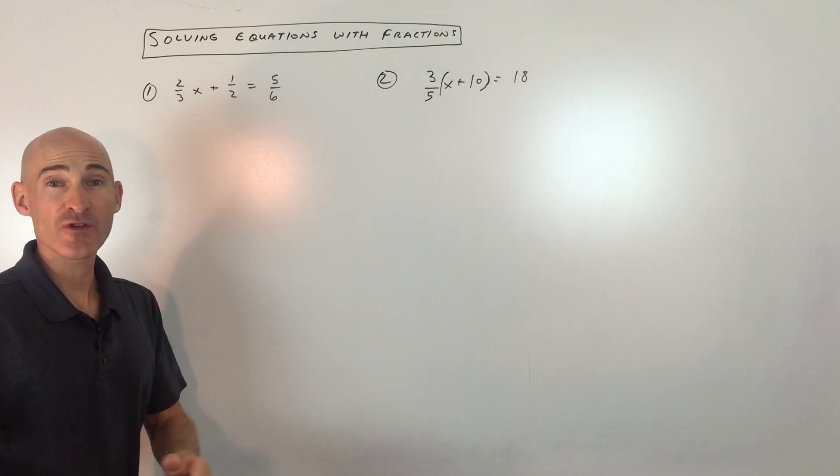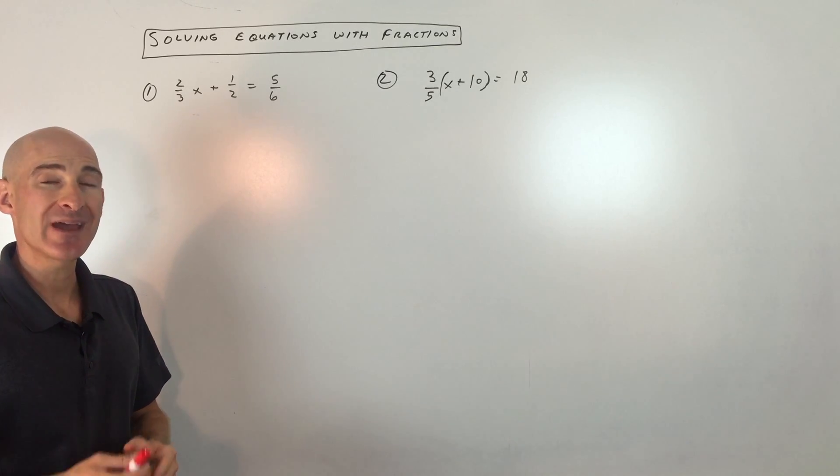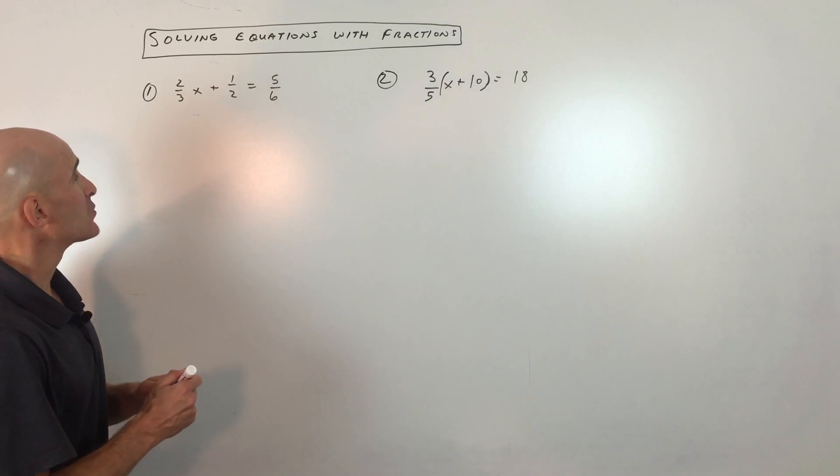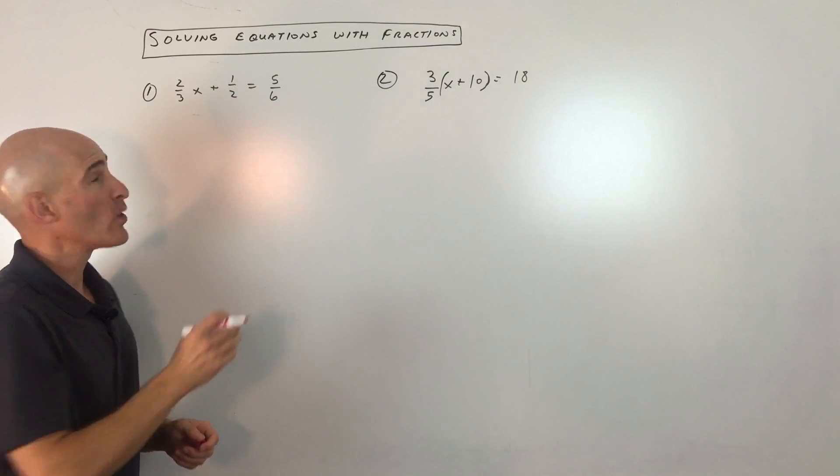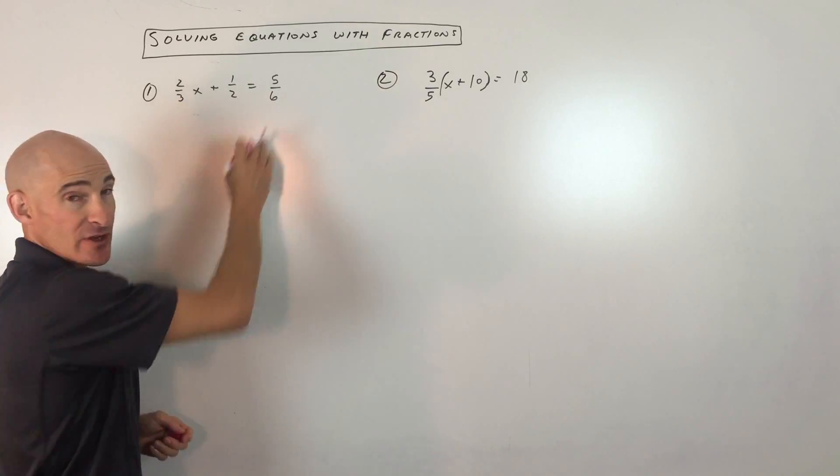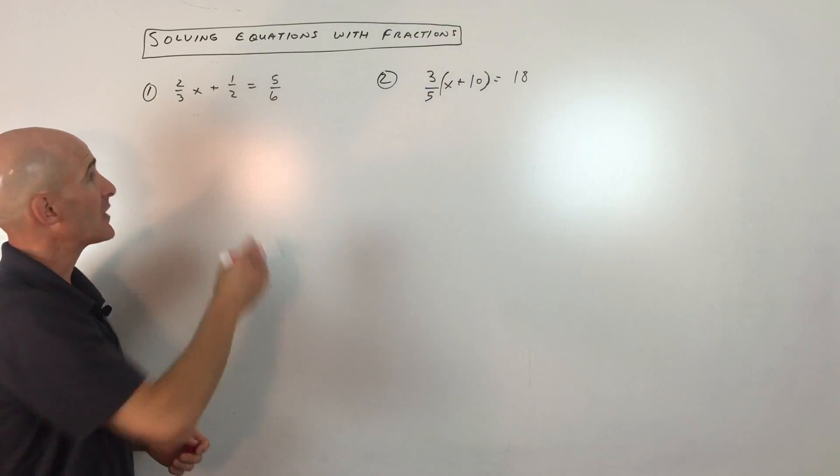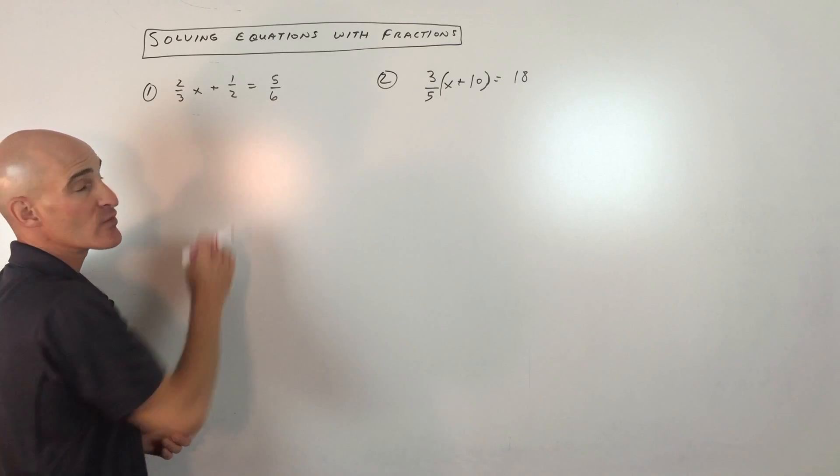The technique to work with these fractions is to get rid of the fractions or eliminate them. The way you do that is by clearing the denominator. So what you would do is you would look at all the denominators of the fractions and say, what's the common denominator or the lowest common multiple? Like if you were getting a common denominator, what would that common denominator be?